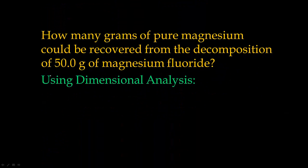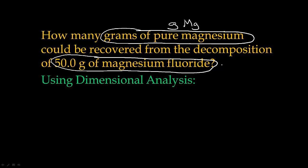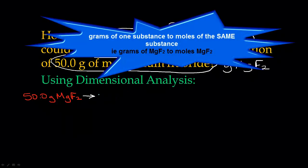Now let's do this same problem using dimensional analysis. With dimensional analysis, remember, we always start out with what we're given — we're given 50 grams of magnesium fluoride — and we need to end up with what we're looking for, which is grams of pure magnesium. We cannot go from grams of magnesium fluoride to grams of magnesium directly. We always have to convert to moles first. Mole is at the heart of chemistry. So we're going to go from grams of magnesium fluoride to moles of magnesium fluoride.